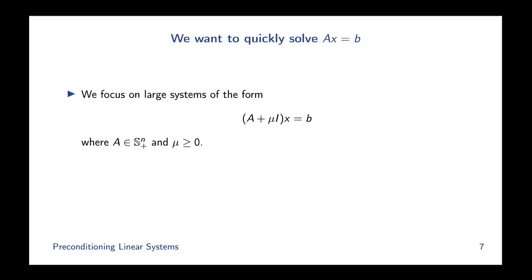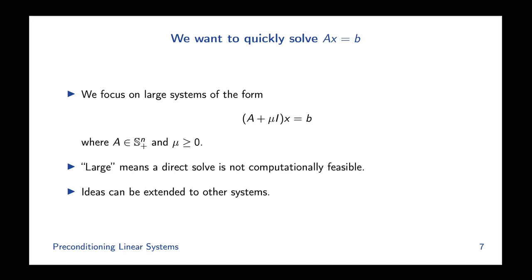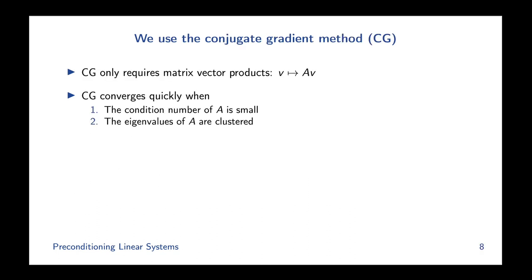We want to solve the linear system Ax = b, where the matrix has the form A + μI, with A positive semi-definite and μ a non-negative parameter. We assume the system has a unique solution, so the matrix is positive definite. By 'large' I mean a direct solve is not computationally feasible, so we're forced to use an iterative method like conjugate gradient. While we concentrate on positive definite systems, these ideas can be extended to other symmetric systems. The non-symmetric case is harder, and I'll discuss that at the end.